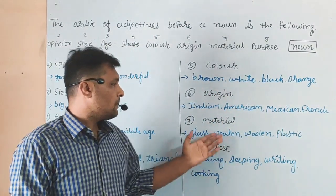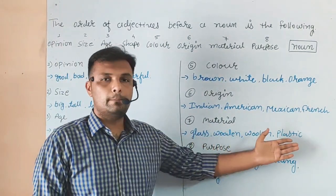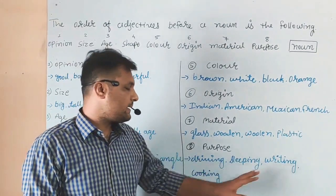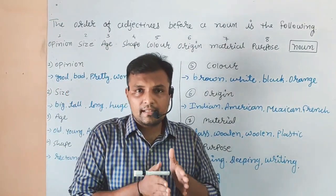Material: glass, wooden, woollen, plastic. Purpose: driving, sleeping, writing, and cooking. These are the eight adjectives.